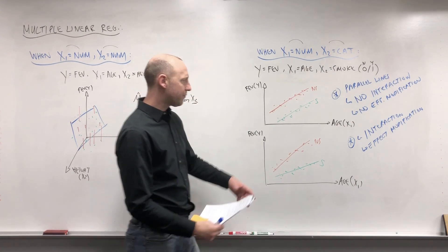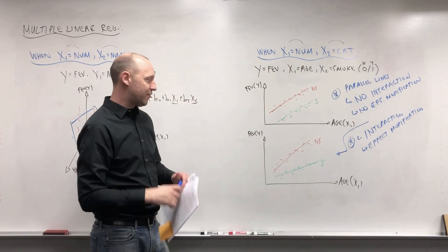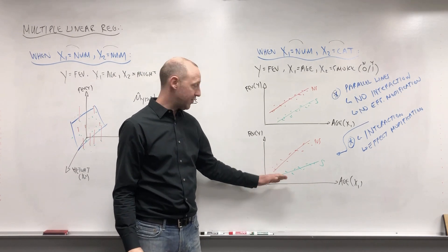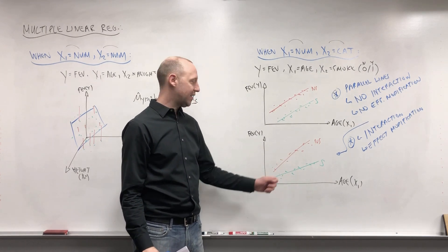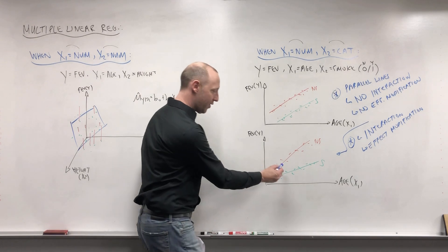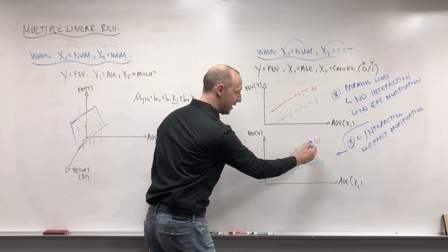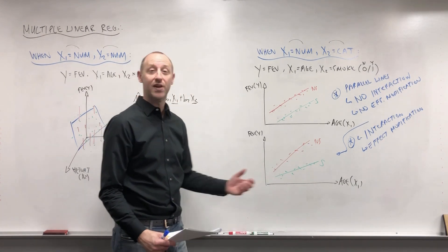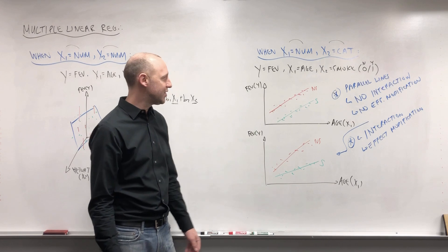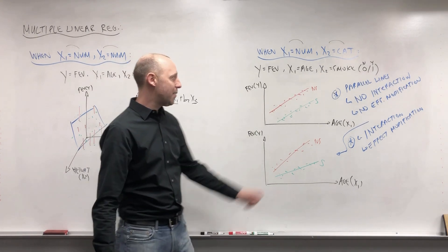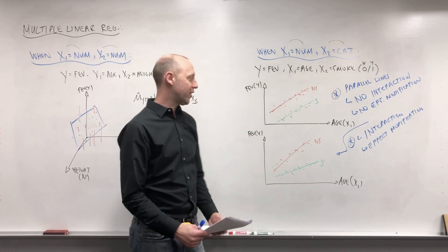Effect modification or interaction, we can see the slopes are different. The rate at which FEV increases with age is different for smokers and non-smokers. The effect of age depends on smoking. Or if we look at the difference, the effect of smoking, the difference between the smoker and non-smoker, it's different depending on the age. The effect of smoking depends on the age, or the effect of smoking is modified by age. So we're going to expand a bit more on this idea of interaction or effect modification, but I wanted to mention it now because that's what we're talking about, including another category or including a categorical variable in our regression model.